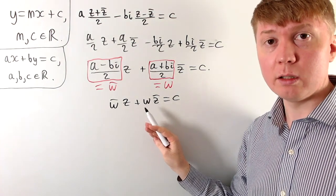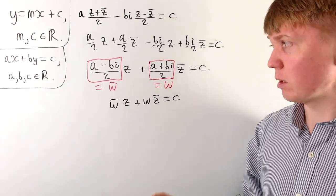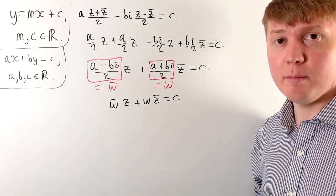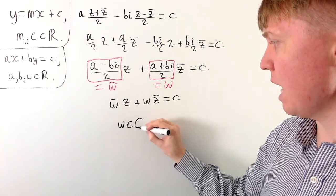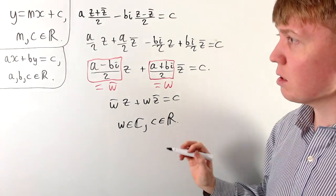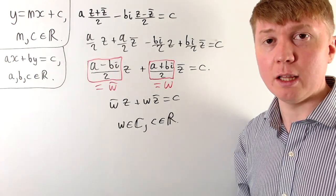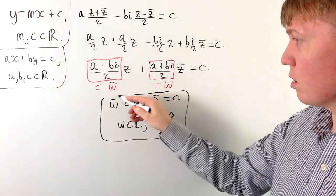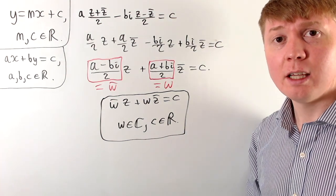Thinking about what values w can take: originally a and b were any real numbers, and since w = (a + bi)/2, we can get any possible complex number by varying a and b. So w is just any complex number, and c must remain real. Just as ax + by = c captured every possible straight line in the Cartesian plane, the equation w̄·z + w·z̄ = c, for complex w and real c, captures every possible line in the complex plane.